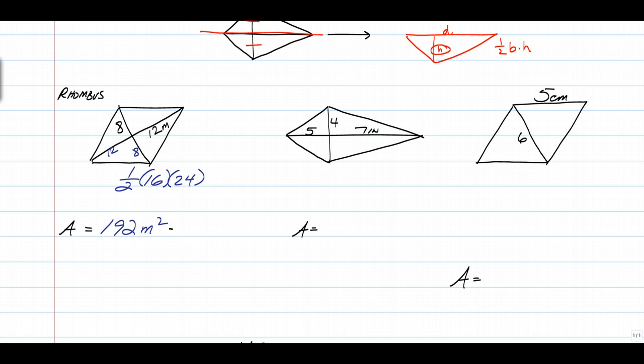All right, that's it. It's plain and simple. All you have to do is multiply the two diagonals, cut it in half.